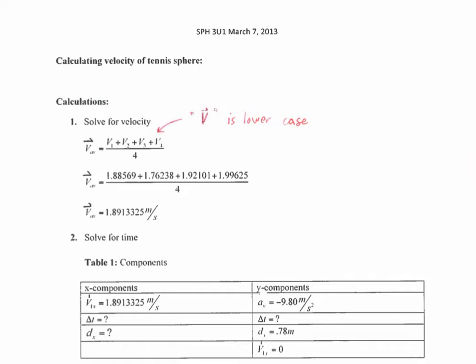Next page, they're showing some calculations. Very neatly labeled calculations. They're explaining what they're doing, solving for the velocity. They have written down the formula to find the average, which is taking their four individual velocities or speeds, dividing it by four. My comment right here, V is supposed to be lowercase. These are all capital, which is not correct.